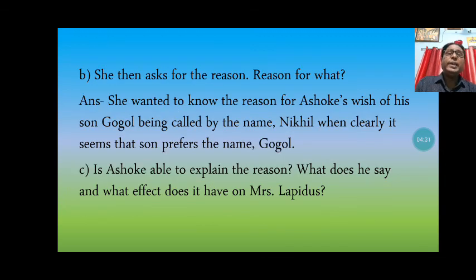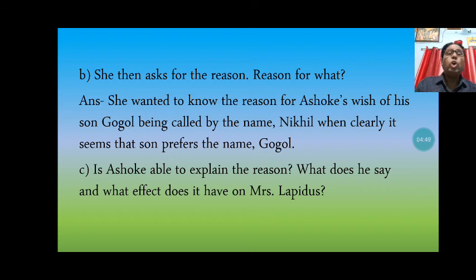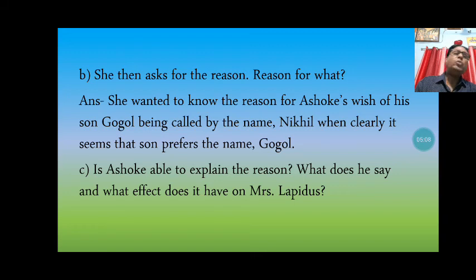Then the next question is: she then asks for the reason. The principal Mrs. Lapidus asked for the reason. She wanted to know the reason for Ashok's wish of his son Gogol being called by the name Nikhil, when clearly it seemed that his son preferred the name Gogol. She wanted to know from Ashok why he wanted his son's name to be changed to Nikhil, when she had discovered that his son preferred to be called Gogol only, not Nikhil. So she asked the reason from Ashok.